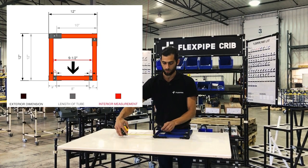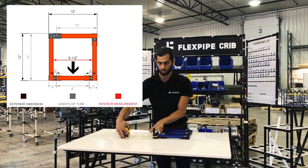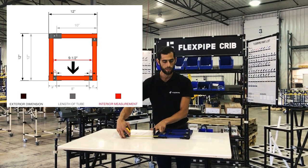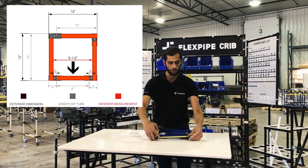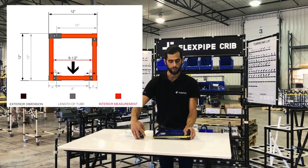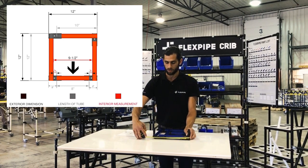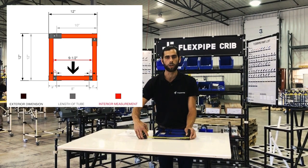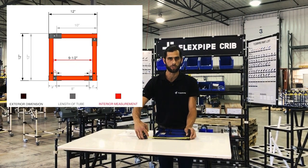Why? Because we need to remove 2 inches from this side and 2 inches from this other side, and this is going to give us an overall of 12 inches.